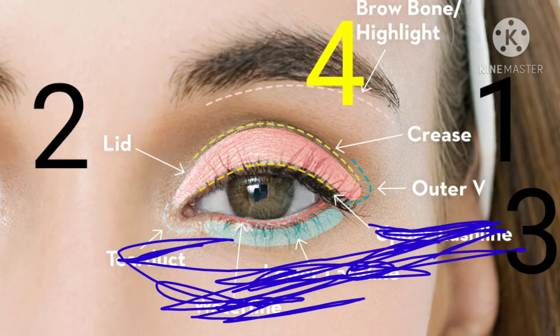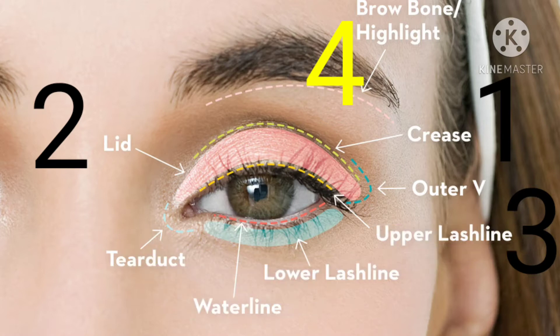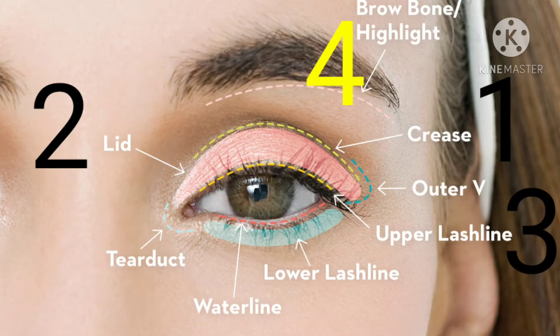The first part is the crease — it's the line area in your eye. To identify it, take a mirror and look down, and you'll find the crease easily. Next is the lid — the eyelid area you close; that's where you usually apply eyeshadow. The outer veil is in the corner of the eyelid. Then there's the brow bone, which is the area under your eyebrow.